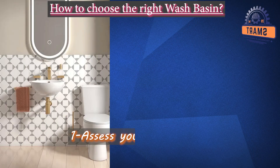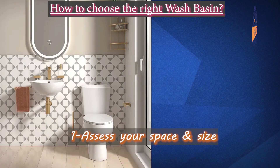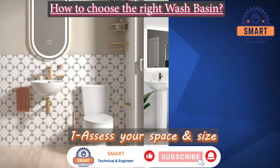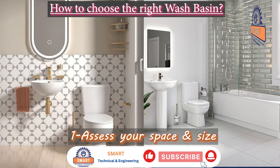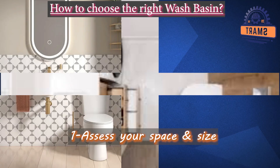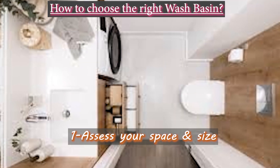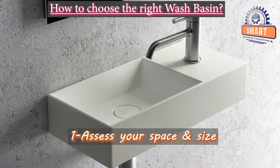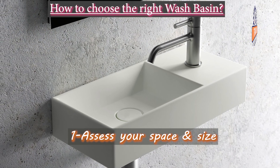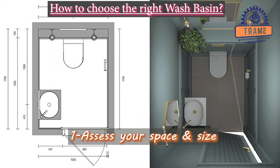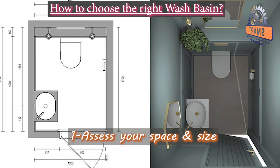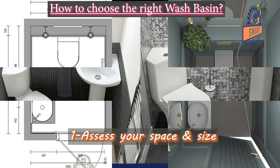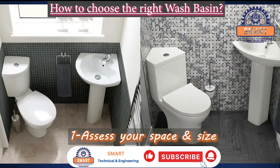1. Assess your space and size. The basin will relate to other fixtures such as the toilet and shower, and should allow adequate space for movement and access to other bathroom features. A small area is a limited space, so maximizing the area is vital. Wall-mounted basins are the best choice for small spaces because they leave the ground open, offer a smooth minimalist look, and save space.